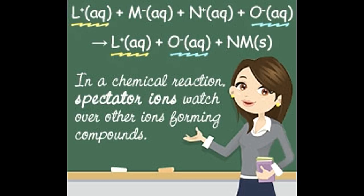Consider a precipitation reaction between two compounds Pb(NO₃)₂ (aq) and KI (aq): Pb(NO₃)₂ (aq) + 2KI (aq) → PbI₂ (s) + 2KNO₃ (aq). The complete ionic equation shows Pb²⁺ (aq), NO₃⁻ (aq), K⁺ (aq), and I⁻ (aq). It can be observed that NO₃⁻ (aq) and K⁺ (aq) are present on both the left and right sides of the equation and remain unchanged. Therefore, they are termed spectator ions.